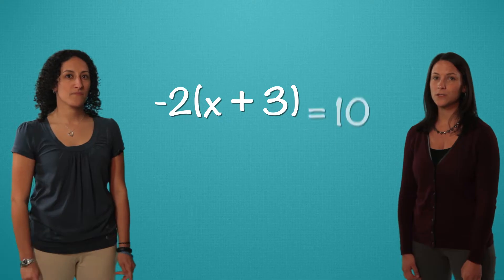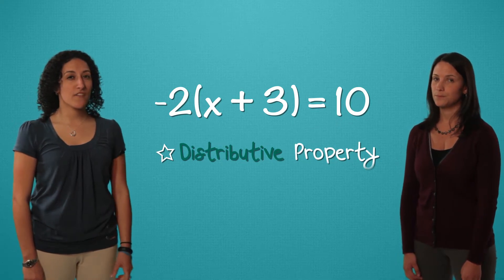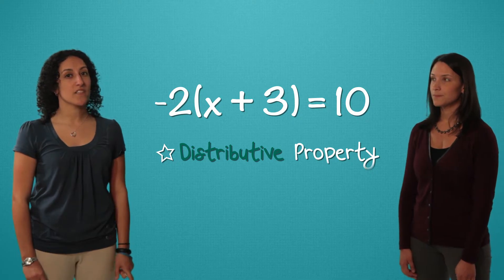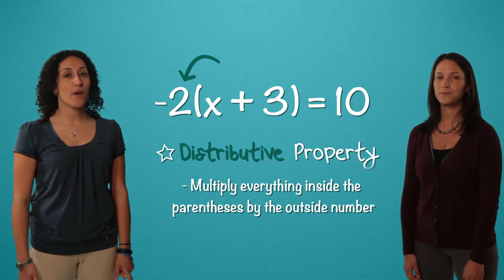Our equation is negative 2 times the quantity x plus 3 equals 10, so this is going to involve the distributive property. Remember, if there's a number right outside the parentheses, like this one, we multiply everything inside the parentheses by the outside number.